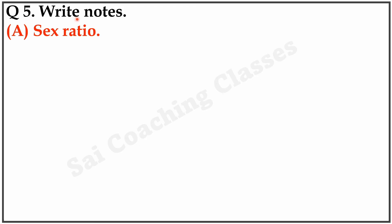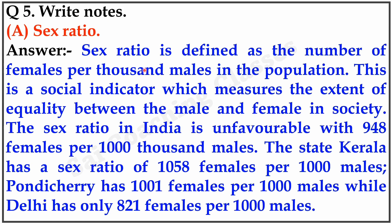Question 5: Write a note. Sex Ratio. Sex ratio is defined as the number of females per thousand males in the population. This is a social indicator which measures the extent of equality between males and females in society. The sex ratio in India is unfavourable with 948 females per thousand males. Kerala has a sex ratio of 1058 females per thousand males, Pondicherry has 1001, while Delhi has only 821 females per thousand males.